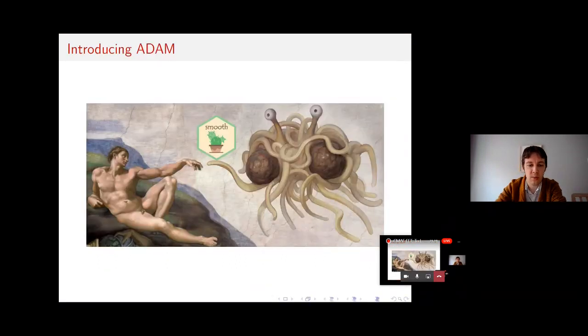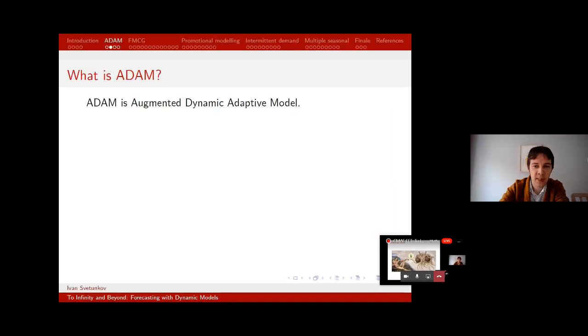Just to make sure we understand this is Adam on the left. And on the right we have flying spaghetti monster. And yes, this is the present of flying spaghetti monster in the form of smooth package. Right, so what is ADAM? ADAM is augmented dynamic adaptive model.